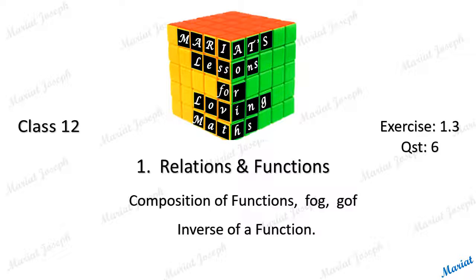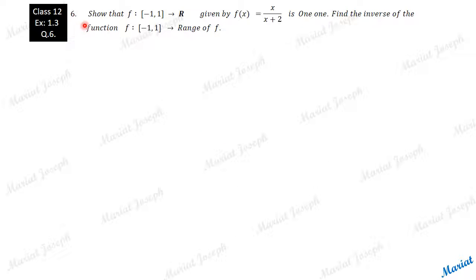Hello everyone. Welcome to the topic Relations and Functions. Here we discuss Composition of Functions, FOG, GOF, and Inverse of a Function. Show that f from the closed interval minus 1 to 1, given by f(x) = x/(x+2), is a 1-1 function. Find the inverse of the function f from the closed interval minus 1 to 1 to the range of f.